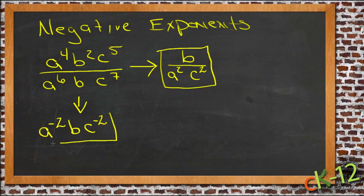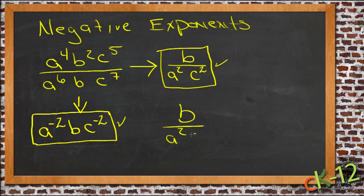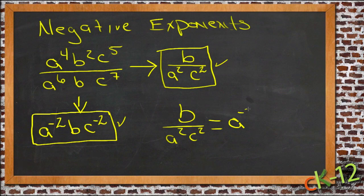So this is also a perfectly valid way to simplify that expression. Now since both of these work, both of these are legal ways to do this, these two statements must be equal. They must be the same thing. So b over a squared c squared is the same thing as a to the negative 2, b, c to the negative 2.